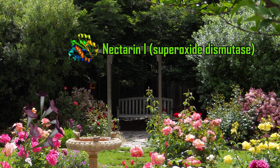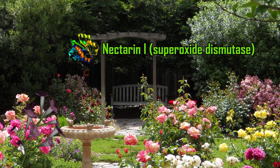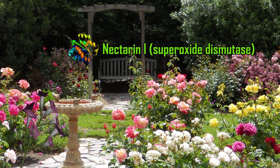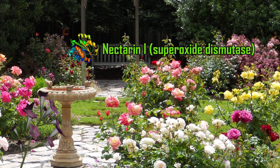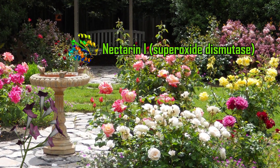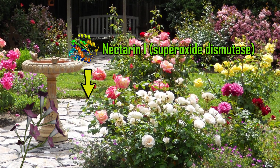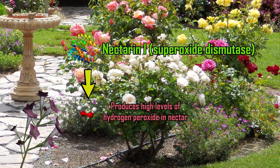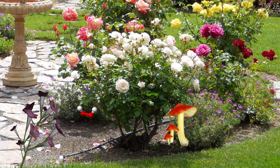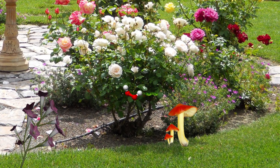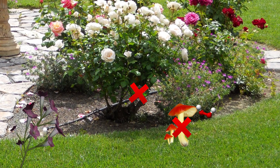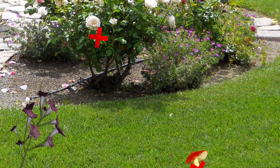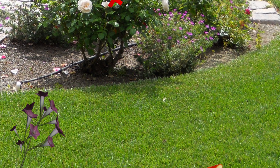In particular, an enzyme called Nectarin-1, which is a superoxide dismutase, catalyzes the production of high levels of hydrogen peroxide. Hydrogen peroxide is a compound that effectively kills invading microbes and fungi.